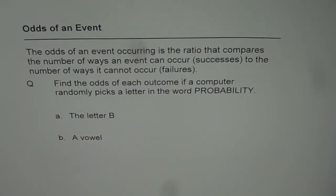Now let us understand the concept of odds of an event. The definition is something like this. The odds of an event occurring is the ratio that compares the number of ways an event can occur, that means successes,